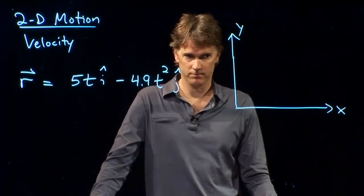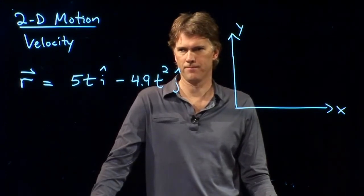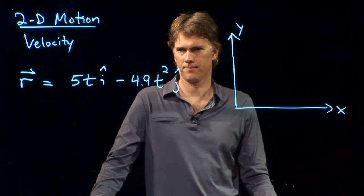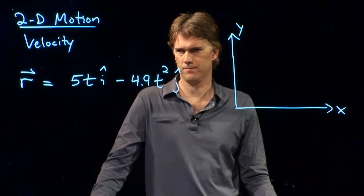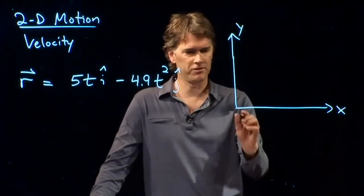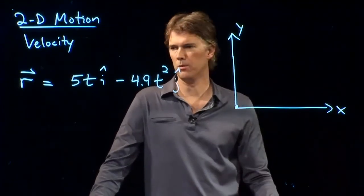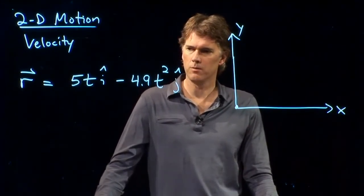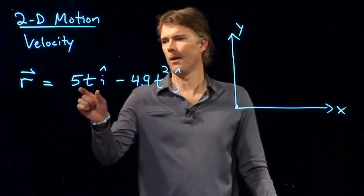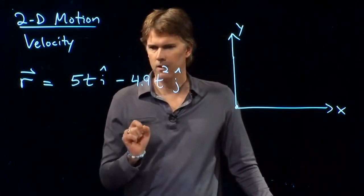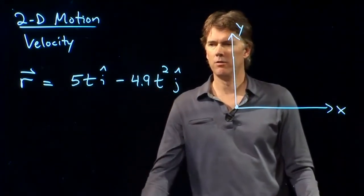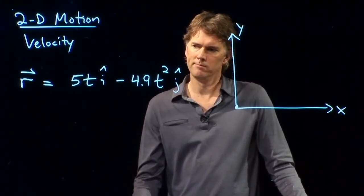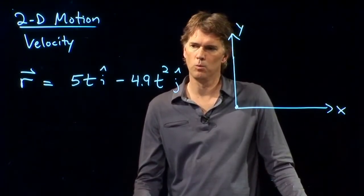If t equals 0, where are we? Yeah. We're at 0, right? We start at the origin. If t equals 0, we are at 0. And now, as time marches on, we have two competing properties here. We have 5t, and we also have minus 4.9t squared. So, how do we figure out what's going to happen?